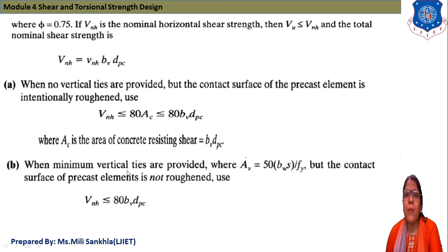When minimum vertical ties are provided, then Av = 50bws/(φfy), but the contact surface of precast element is not roughened, so Vnh ≤ 80bv·dpc. This is the condition for nominal horizontal shear strength with respect to reinforcement.